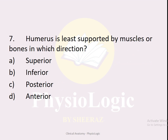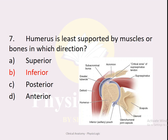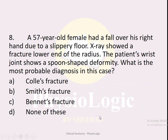MCQ number seven: The humerus is least supported by muscles or bones in which direction? Options: A — superior, B — inferior, C — posterior, D — anterior. The correct option is B — inferior. The shoulder joint has least support inferiorly; superiorly it is covered by the rotator cuff muscles.